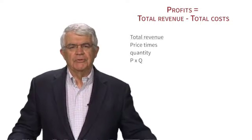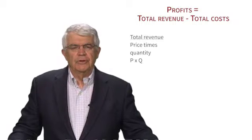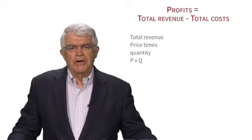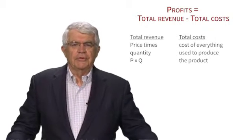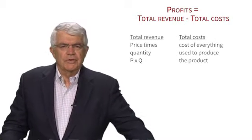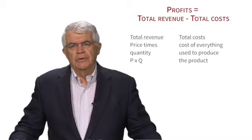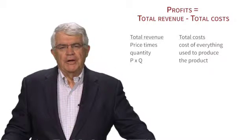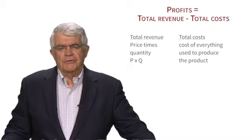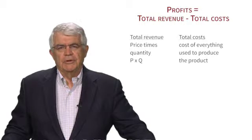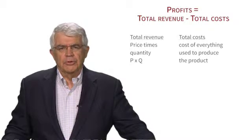Total revenue is P times Q. The higher the price, the larger the revenue. The more you sell, the higher Q, the larger the revenue. Total cost is the cost of everything you need to produce the product — the cost of the land, the cost of equipment, and the cost of the workers.